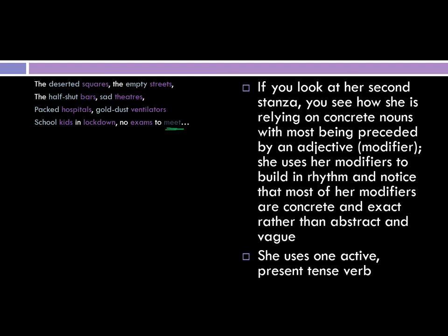We're seeing a lot of adjectives and no adverbs. If you favor descriptive words, it's often better to describe your noun. She has no need to describe 'me,' but she is describing: school kids, packed hospitals, half-shut bars, deserted squares, empty streets. She has very few abstractions. When she describes 'sad theatres,' 'sad' is definitely an abstraction because it is an emotion. 'Gold dust ventilators' is a really beautiful way of describing ventilators.